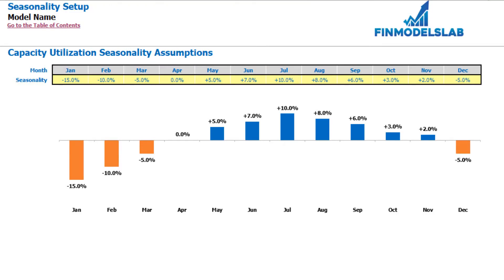On the seasonality tab you can set up your capacity utilization seasonality assumptions across the months. The dashboard previously set up the average capacity utilization by years, and here you may adjust it for different months across the year.